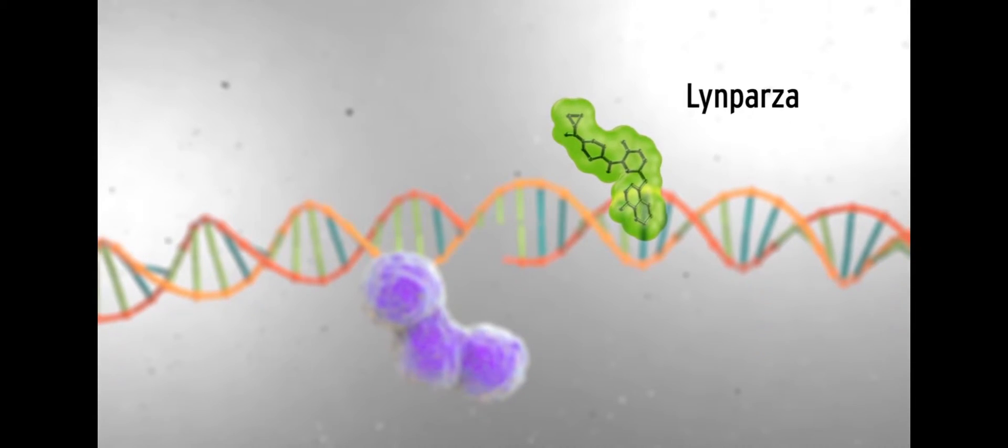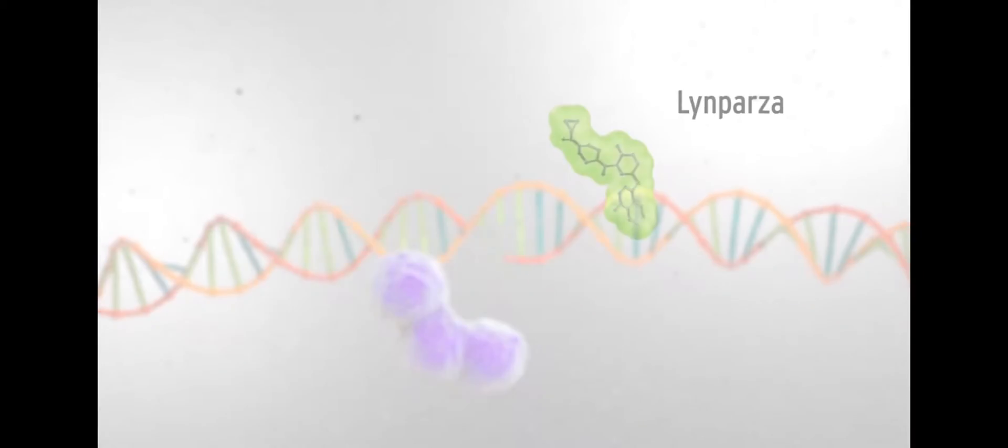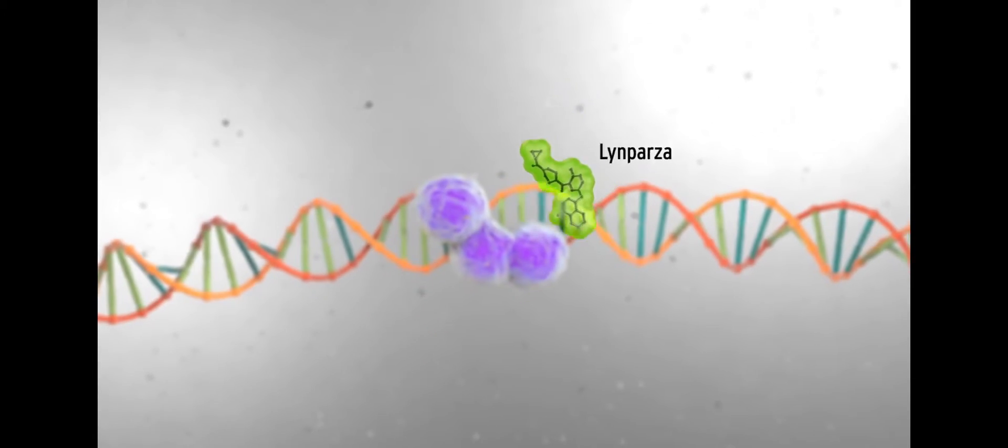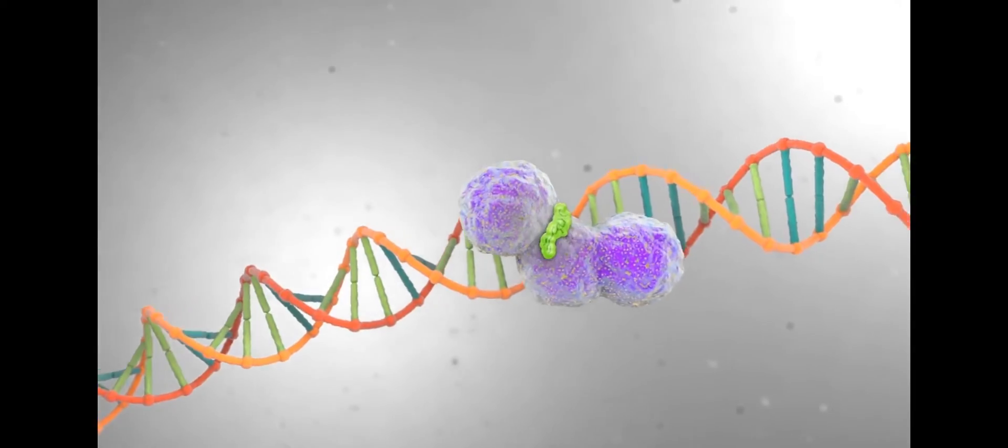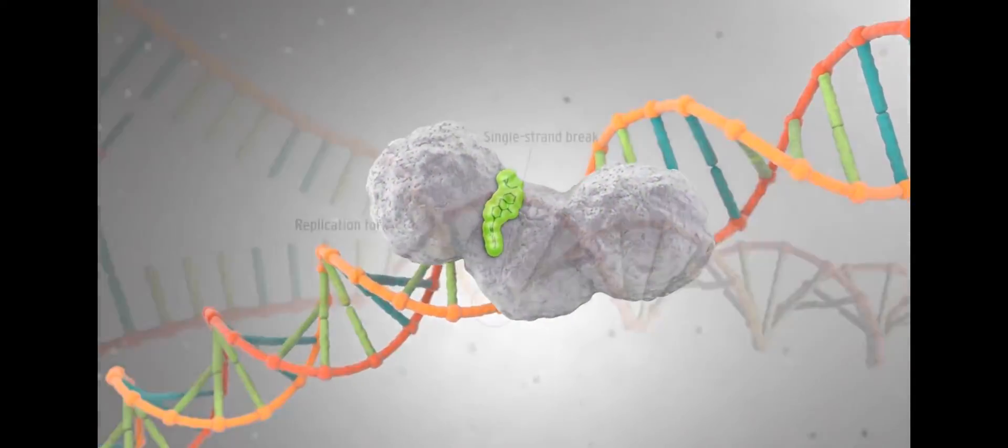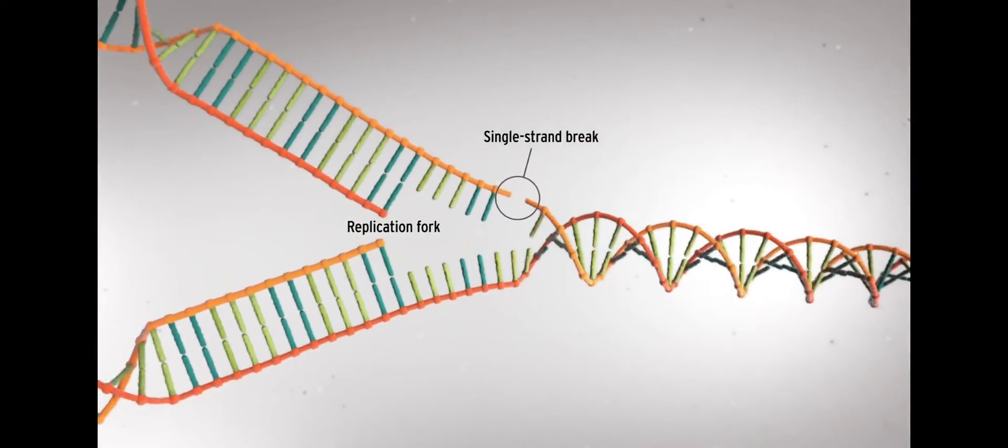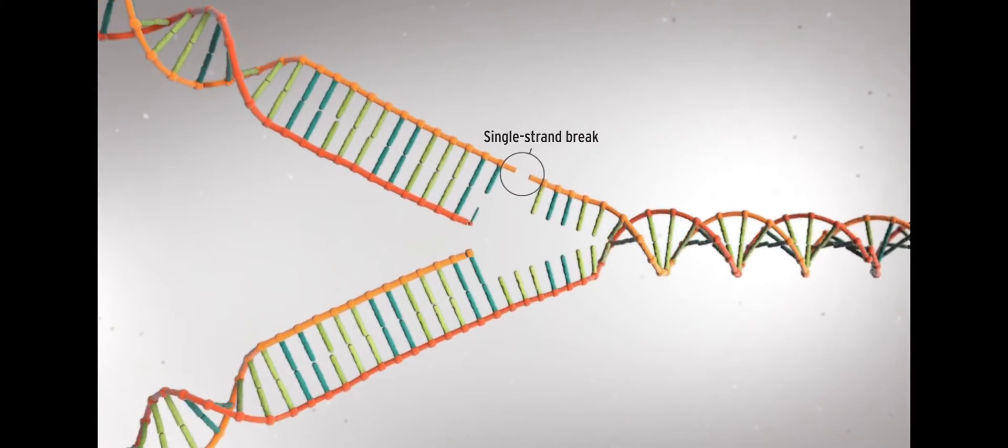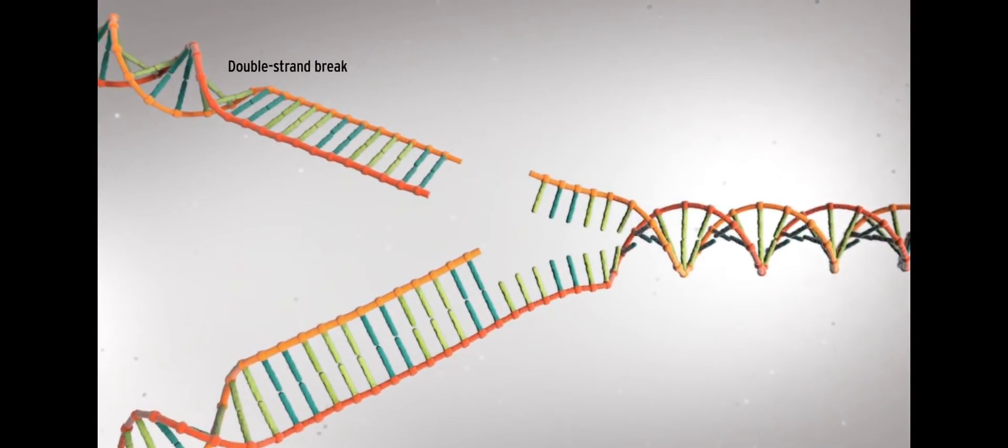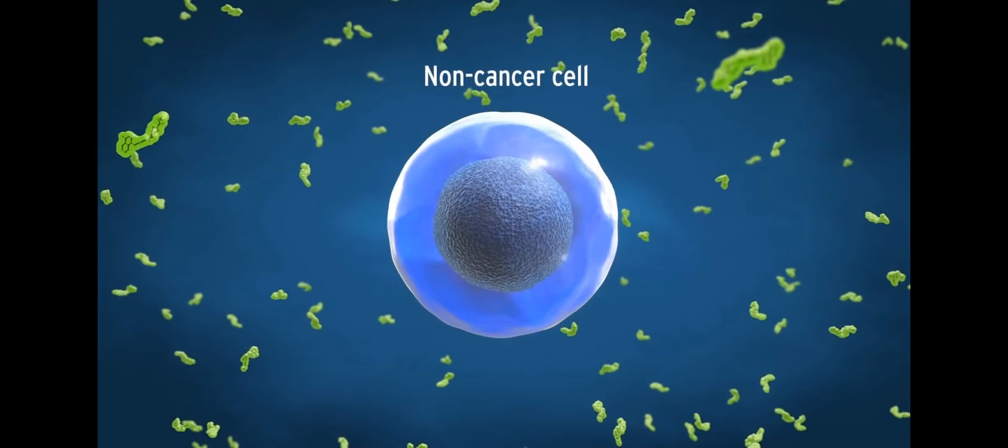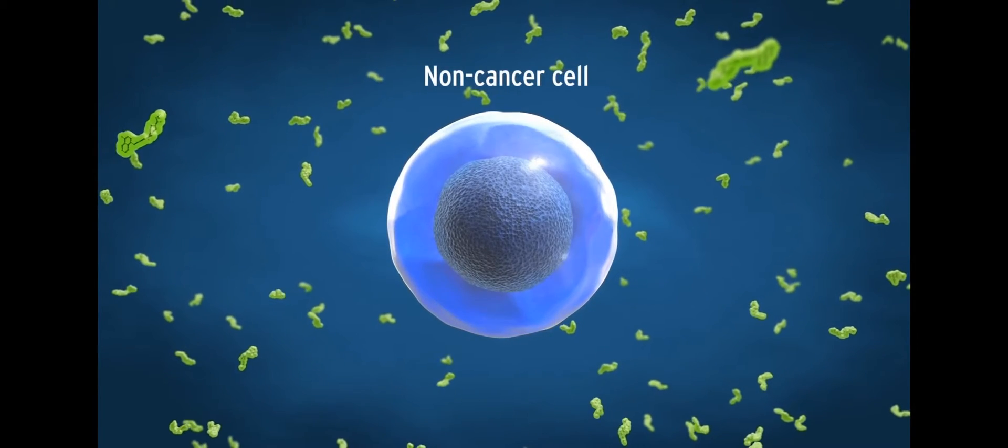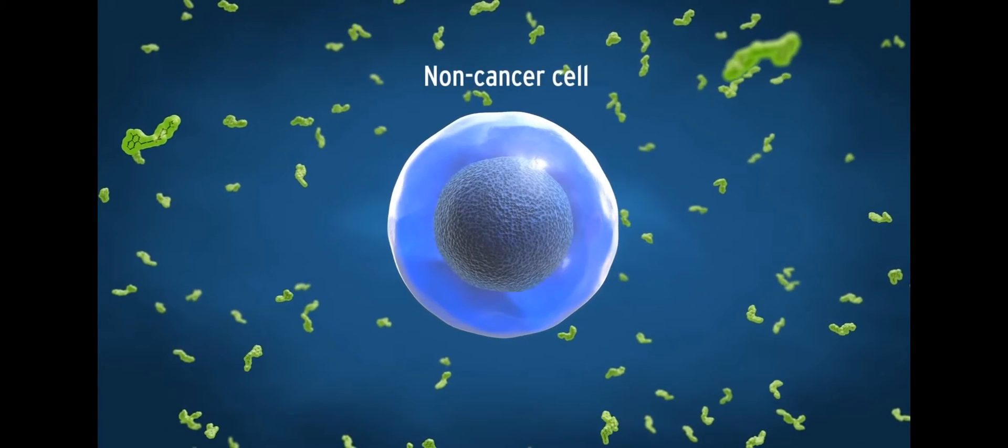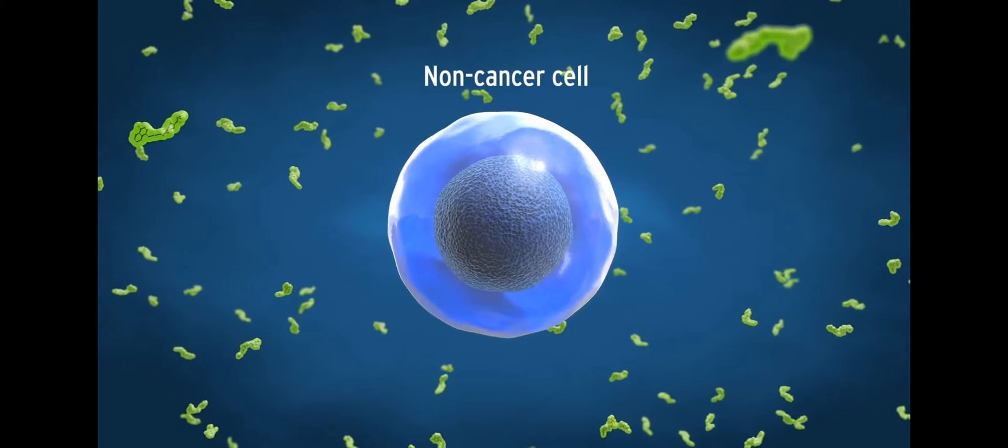What this drug does is take advantage of a vulnerability, a weakness in cancer cells that isn't present in normal cells. And very simply what this means is that normal cells in these patients have two ways of repairing DNA damage. The PARP inhibitor, by binding a protein called PARP, inhibits one of those pathways, but the normal cell still has the other pathway, so they can survive.